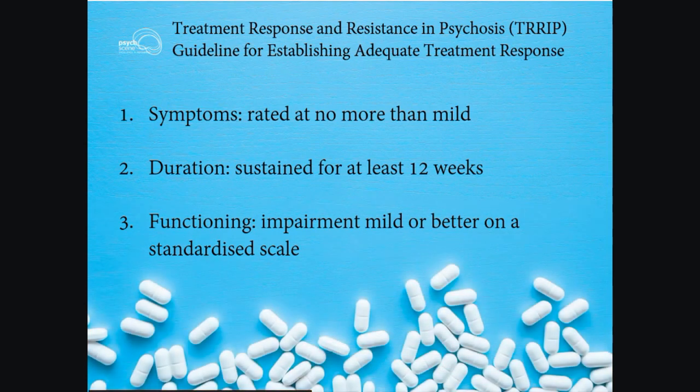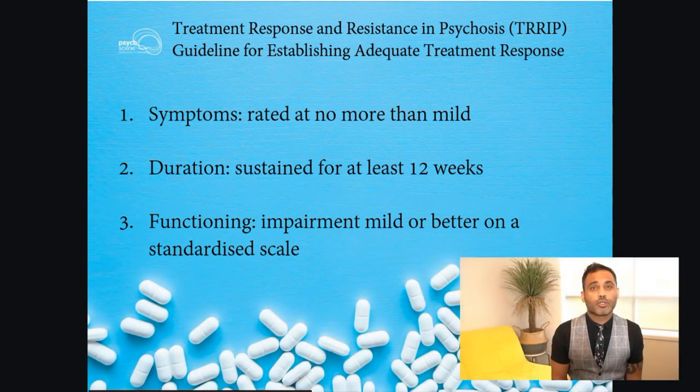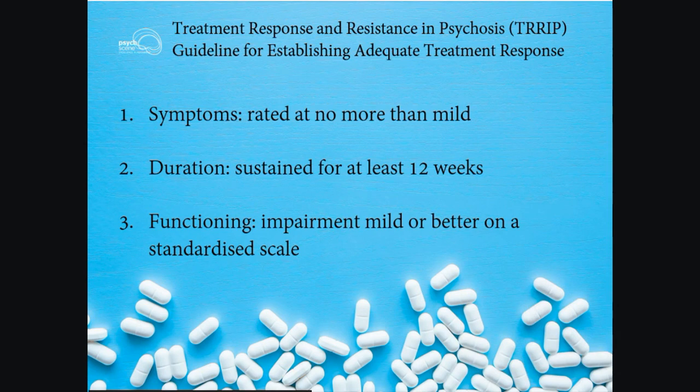We also have the TRIP guideline — Treatment Response and Resistance in Psychosis — for establishing adequate treatment response. When we think about adequate treatment response, the first point is symptoms rated at no more than mild. Second, this result is sustained for at least 12 weeks. The third is functioning, where impairment is mild or better on a standardized scale.